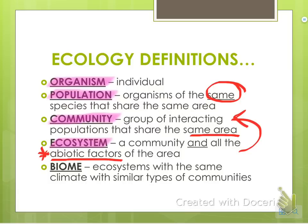Biomes, which you've spent some time on already, are ecosystems with the same climate. Climate includes things like temperature and rainfall — your overall environment. A biome isn't going to mix a desert ecosystem and a tundra ecosystem; it's going to be different tundra ecosystems that together make up that entire biome.